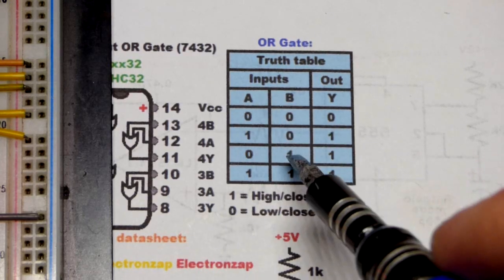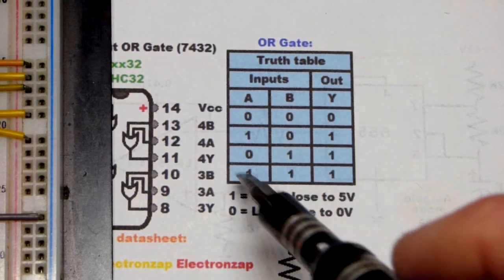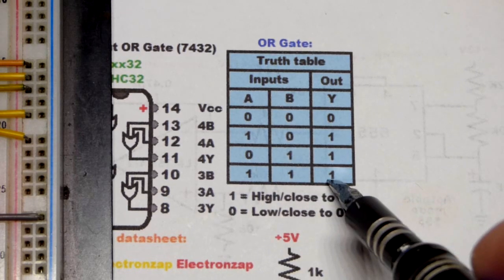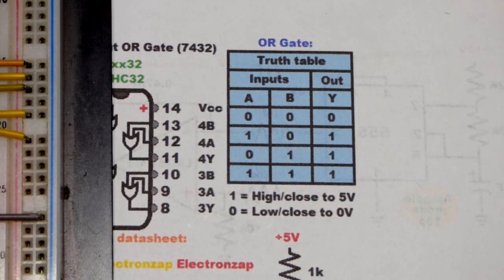however many inputs we have, as long as one of them is high, the output will be high. And if all of them are high, then the output will be high. Basic OR gate rules.